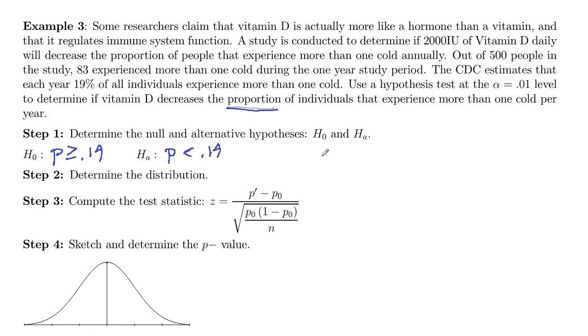In our sample, we had out of 500 people, that's n. So n is 500. 83 experienced more than one cold. So that's your successes, your x.